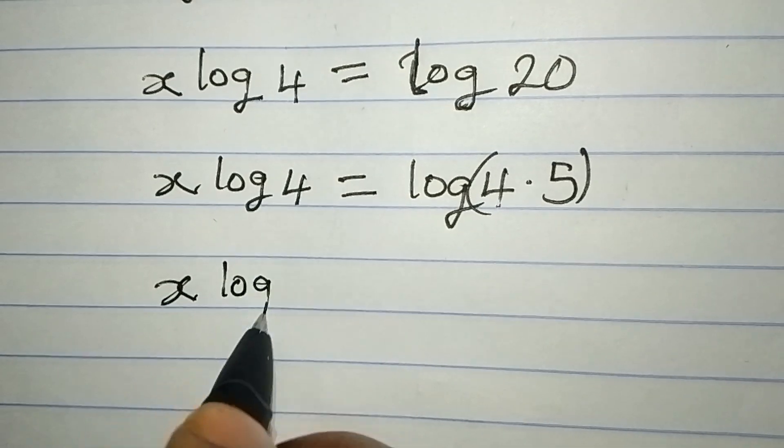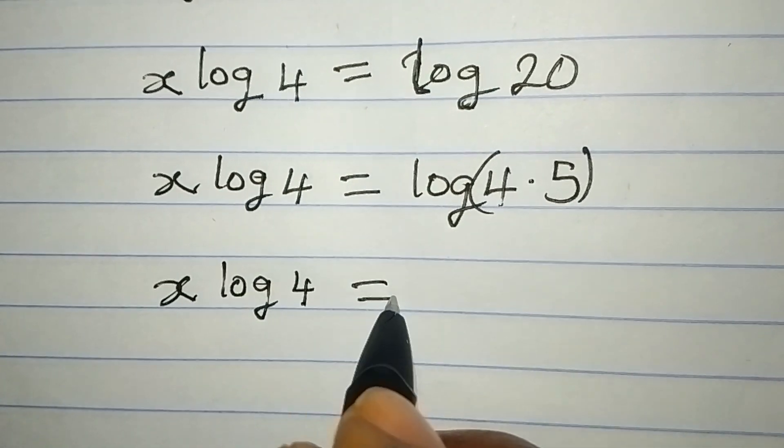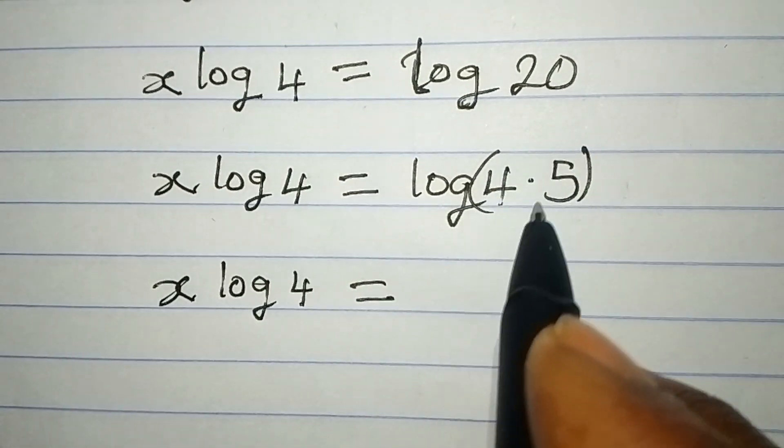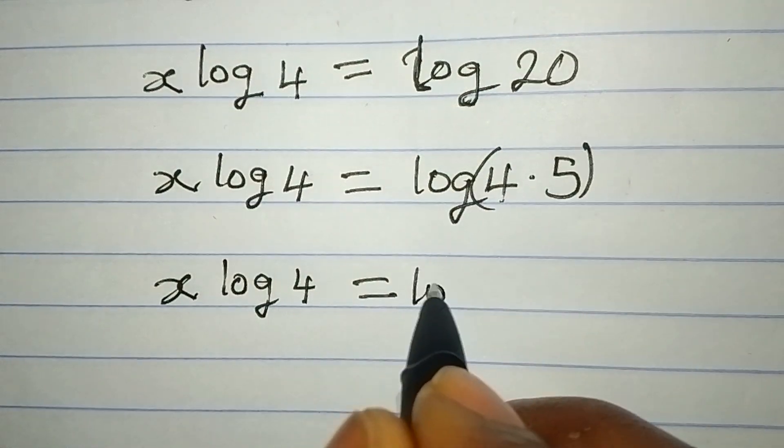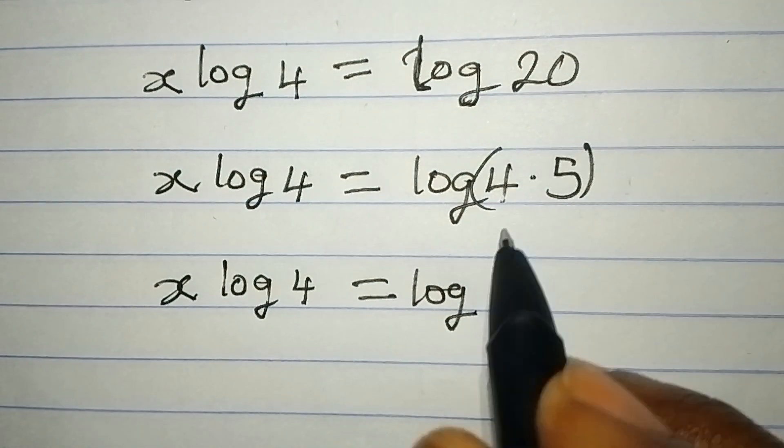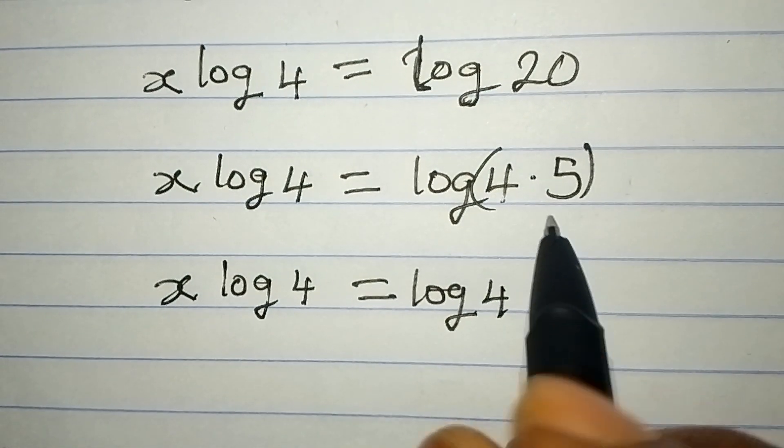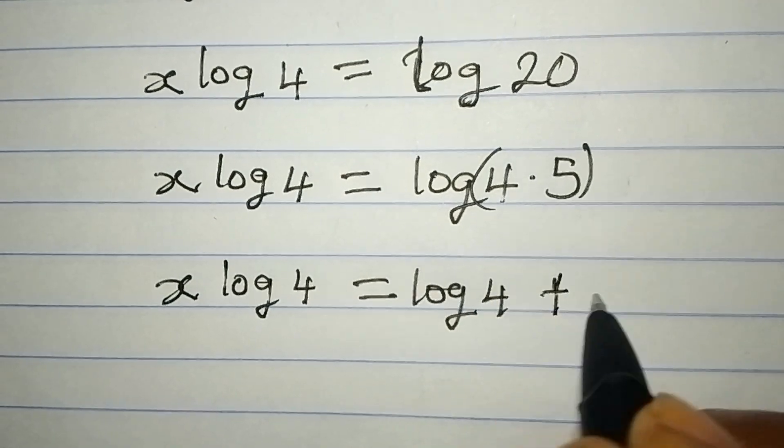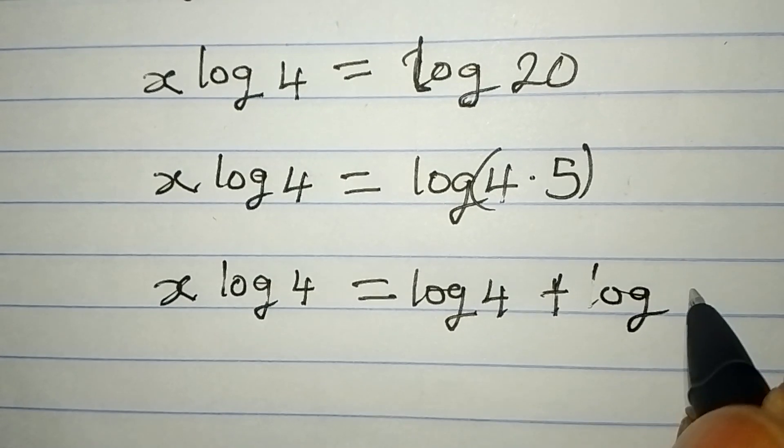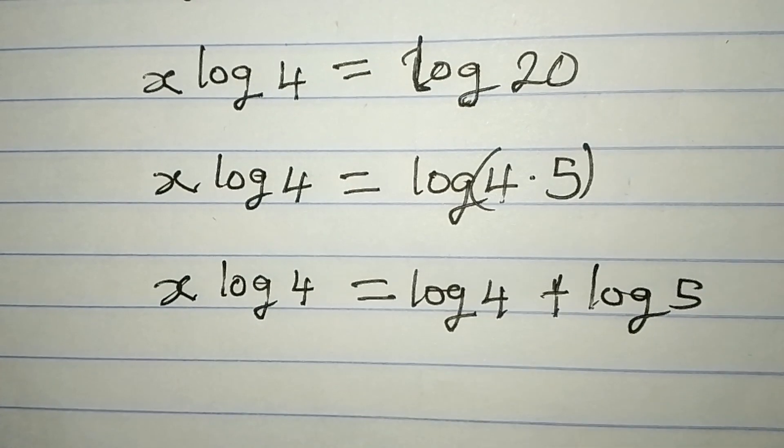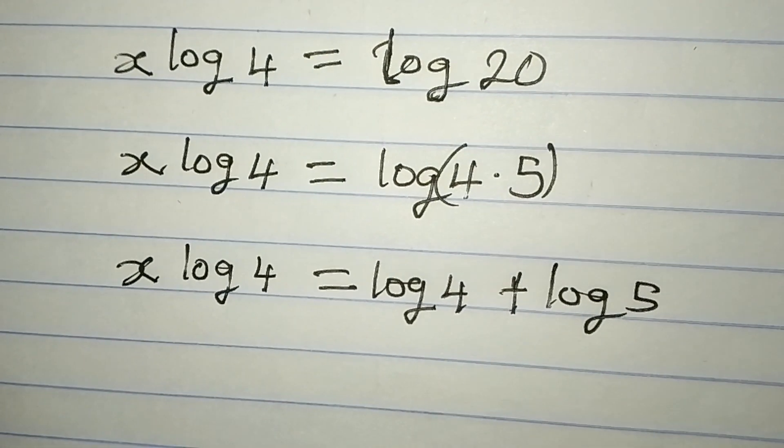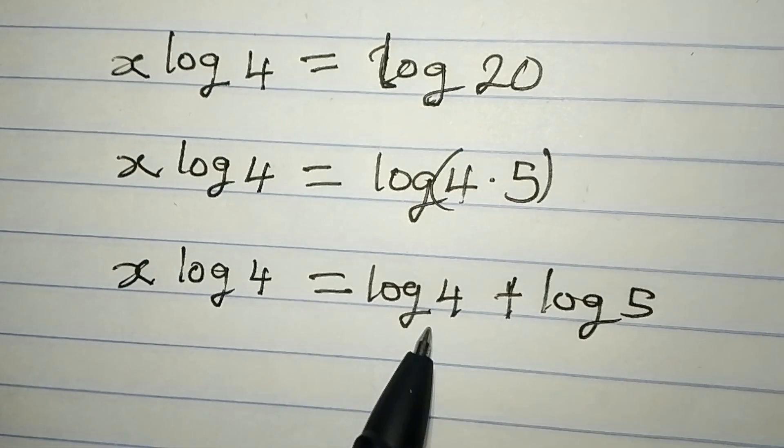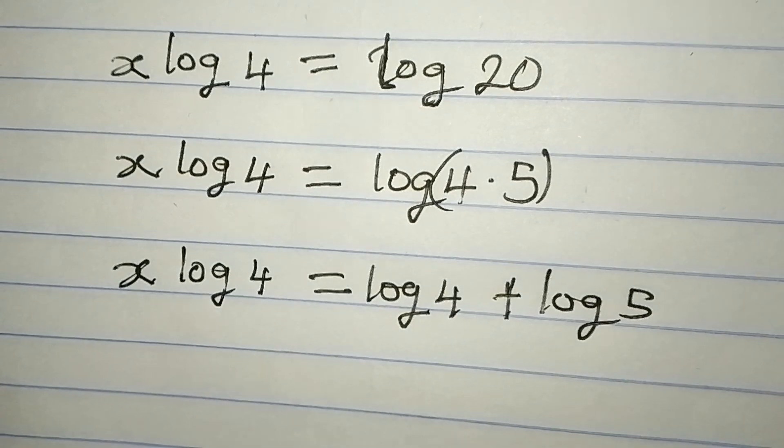x log 4 here is equal to, now we are going to obey one of the laws of the logarithm that log 4 times 5 is the same thing as log 4 plus log 5.